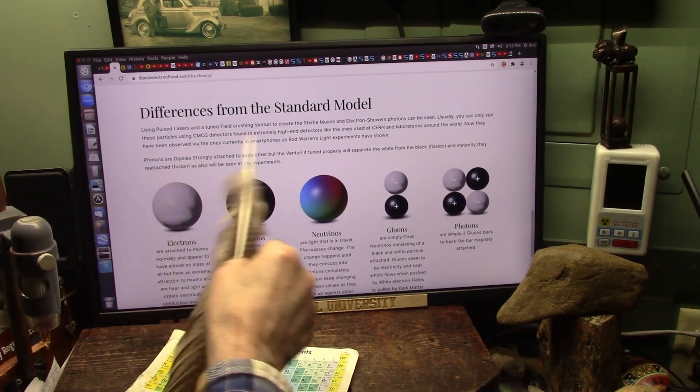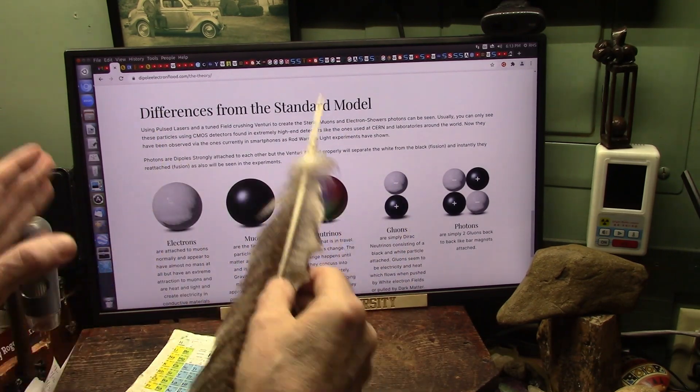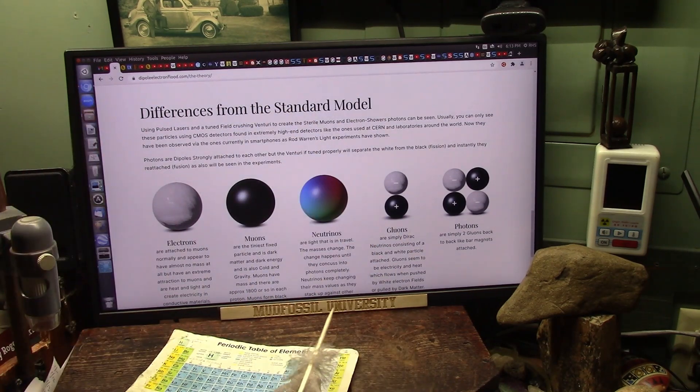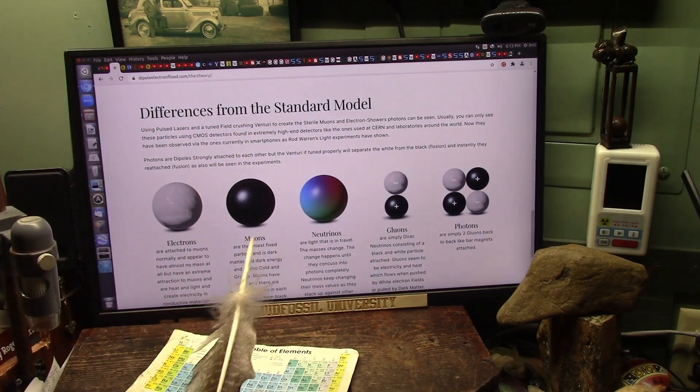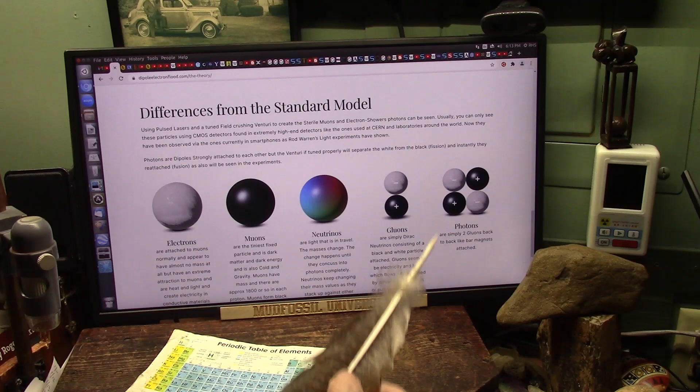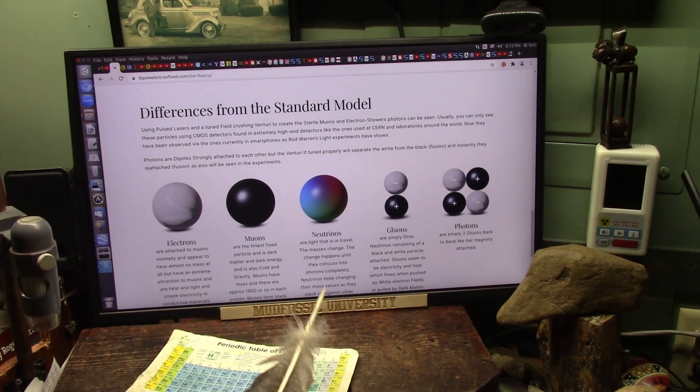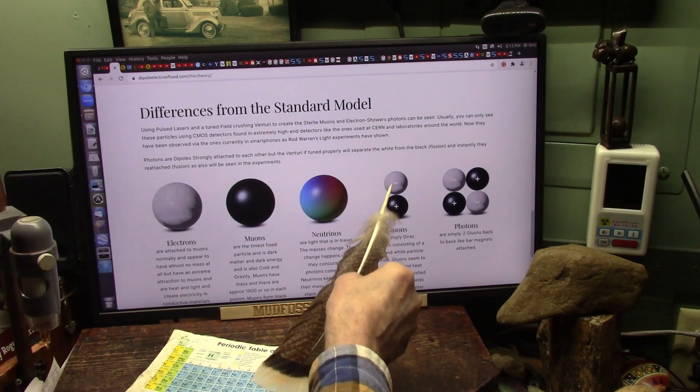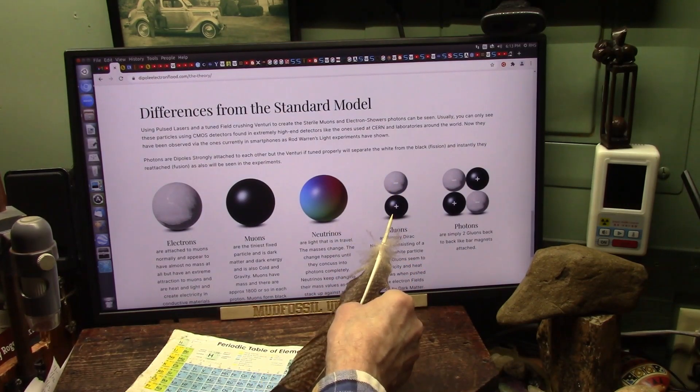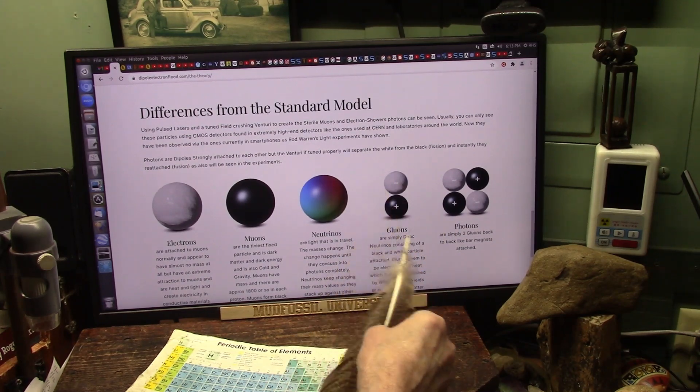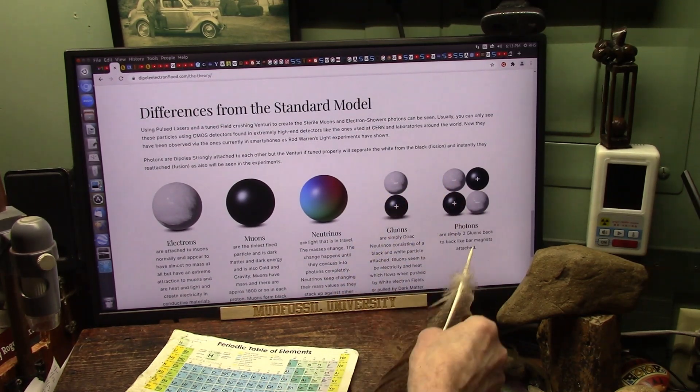This just starts to discuss the differences between dipole electron flood theory and the standard model. And there are significant differences and there are some similarities. But dipole electron flood theory says there's nothing but these two particles. And two together is what we would call an electron. They call a gluon. That's fine. And two gluons together make up a photon.